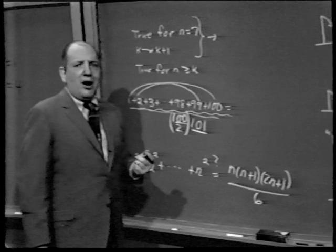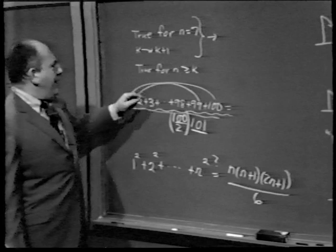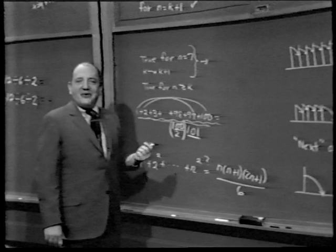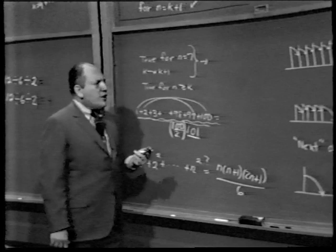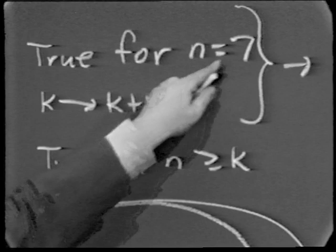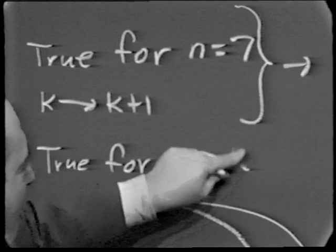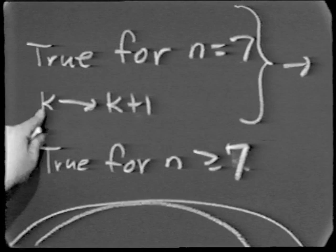One more aside: in our definition of mathematical induction, we said show the conjecture is true for n equals 1, but our first example didn't start until n=2. More generally, if the first number you can prove the conjecture for is, say, n=7, and you can also show that truth for k implies truth for k+1, then the conjecture is true for all n greater than or equal to 7. If it's true for 7, it's true for 8; true for 8, true for 9; and so on.